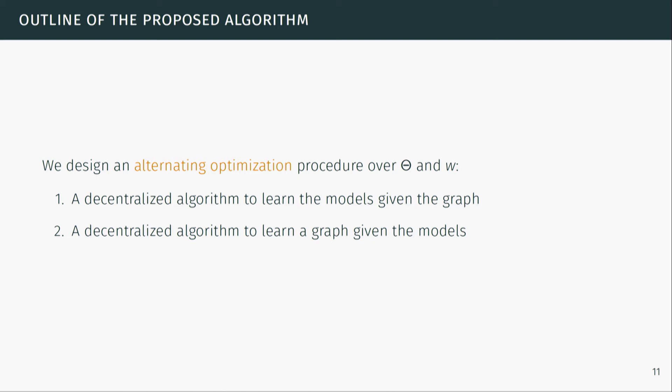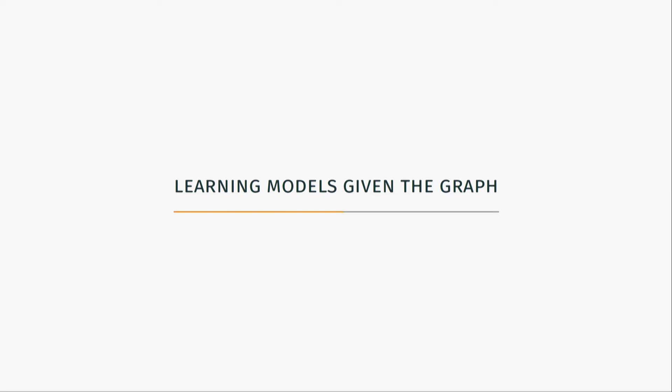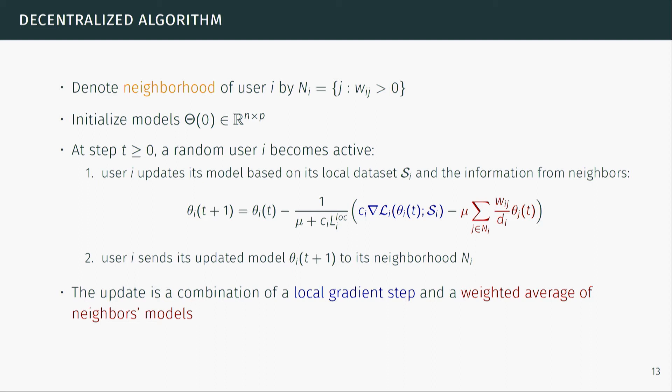We solve this optimization problem with two types of parameters via alternating optimization: initialize W, then optimize models given the graph, fix the models and optimize the graph, and so on. This requires two components: a decentralized algorithm to learn models given the graph, and one to learn the graph given the models.